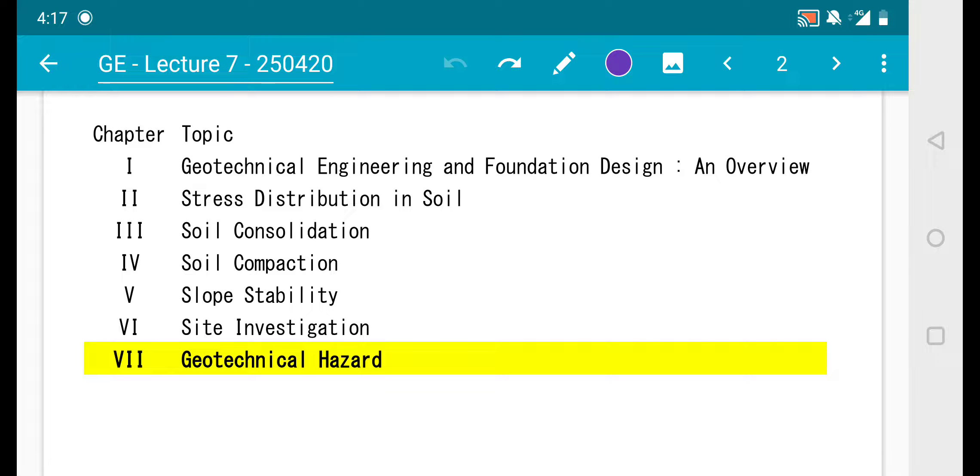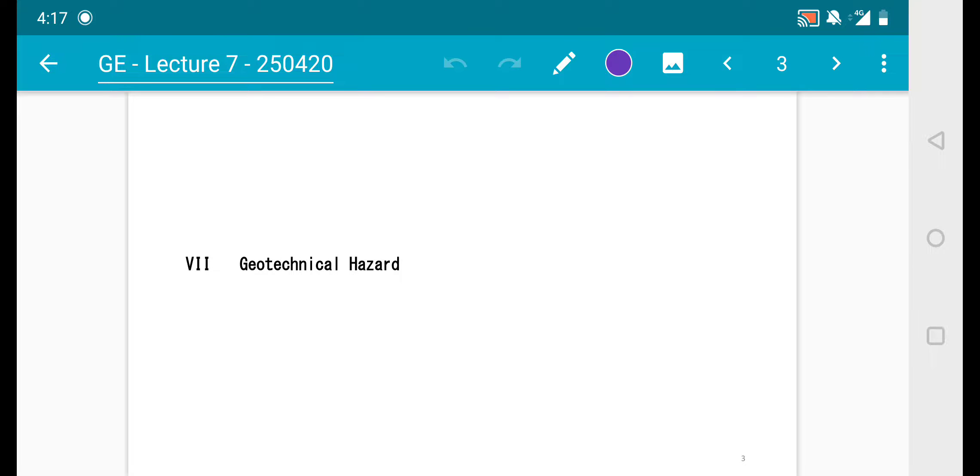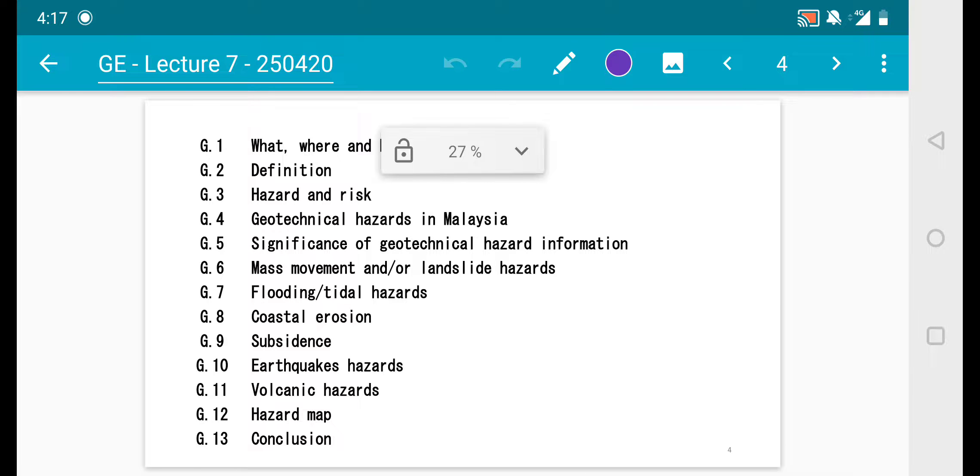All together we have a total of seven chapters that we have discussed and here's the last one. Before we start, we'd like to know what geotechnical hazard is all about. The things that you need to know is the question - the what, where, and how.